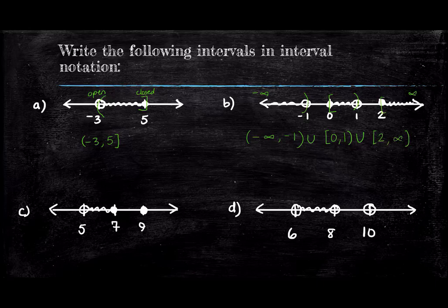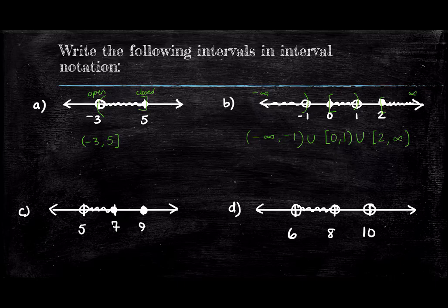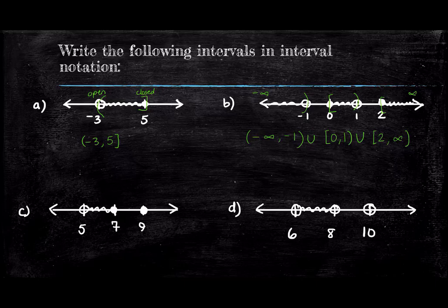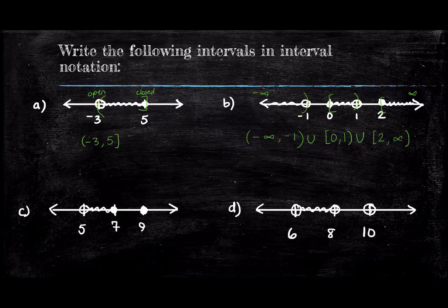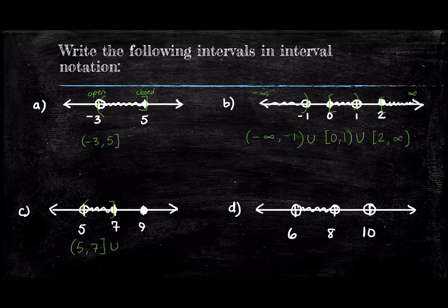Hopefully, you got square bracket two, comma, infinity with a parentheses. The plus sign on the infinity is nice, but not necessary and will frequently be omitted, just like we omit the positive sign from a positive number. Now onto problem C. Go ahead and write out that first interval. You should get parenthesis five, comma, seven with a square bracket to close.